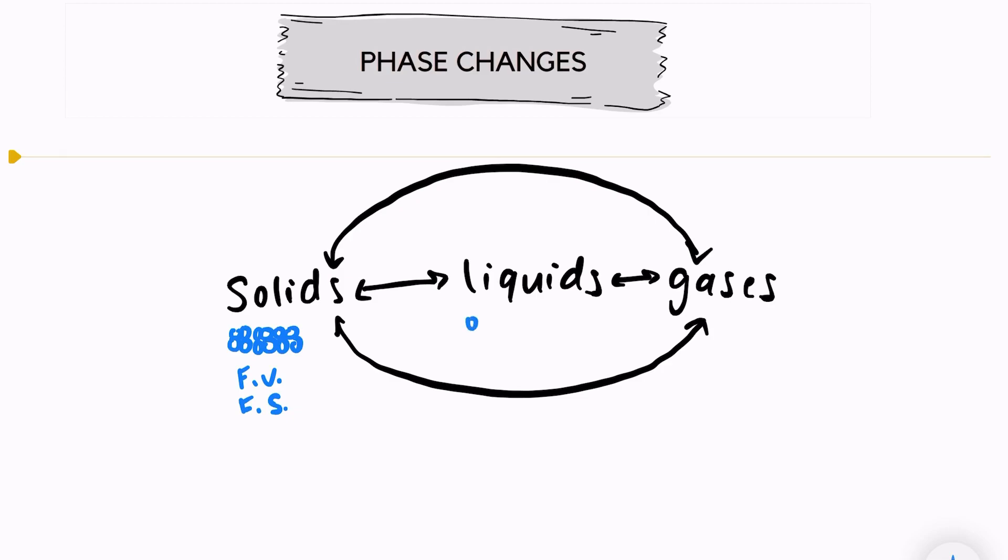Liquid particles are a little bit more spread out. They're also moving faster than solids, and they have a fixed volume, but no fixed shape. So if you have your cup of water, the water will take the shape of your cup. It doesn't have a fixed shape, but it does have a fixed volume.